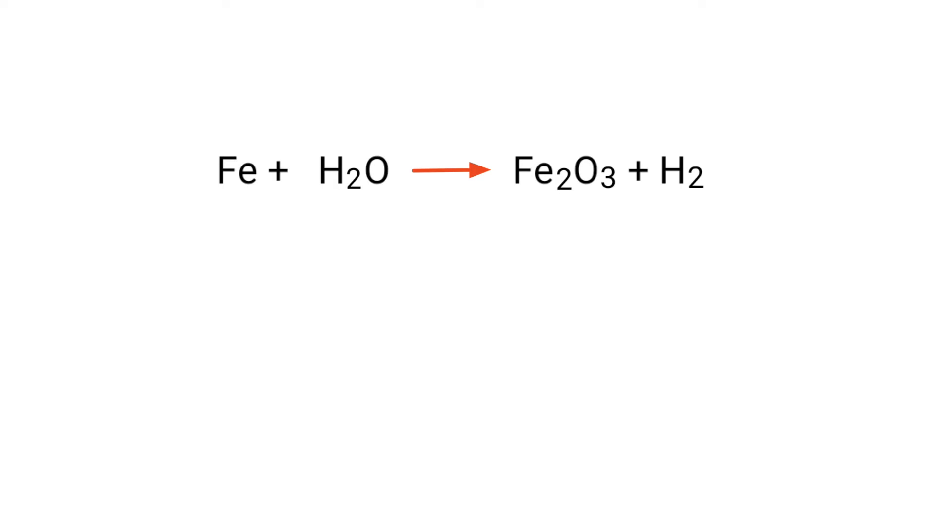Figure the reducing and oxidizing agents by the rules of assigning oxidation numbers. In this equation, the iron has charge of 0 and it's changing into plus 3.